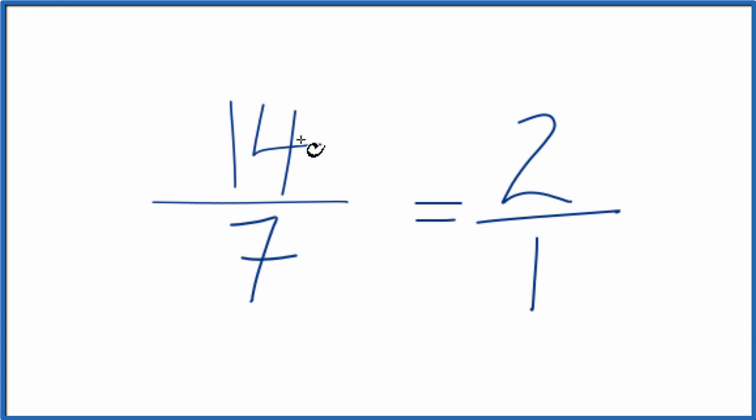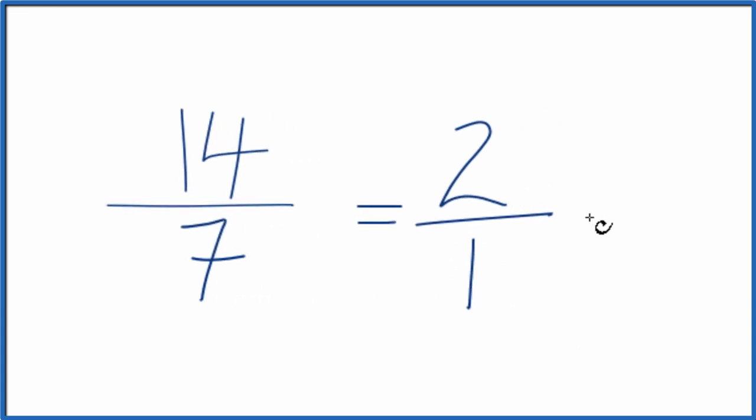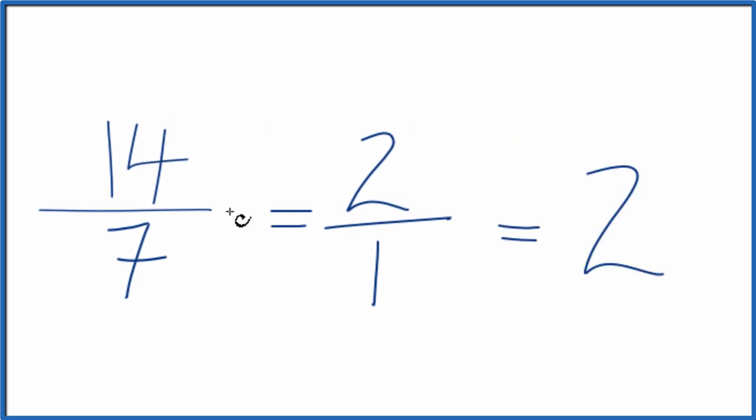So the fraction 14 sevenths can be simplified down to 2 over 1. And 2 divided by 1, that's just... So you could say 14 sevenths can be simplified to 2 over 1, or just the whole number 2.